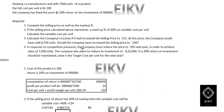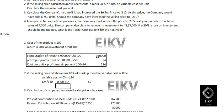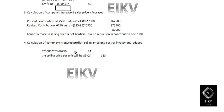Requirement number four: in response to competition pressure, the company must reduce the price to 105 in the next year. To achieve sales of 7,500 units, the company also plans to reduce the investment to 8,25,000. A 20 percentage return on investment should be maintained. We need to find the targeted cost per unit for the next year.